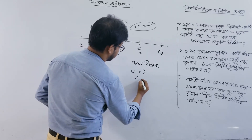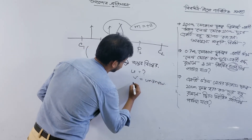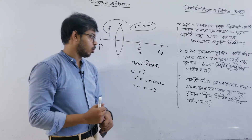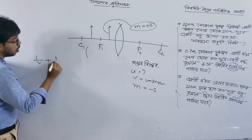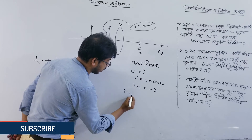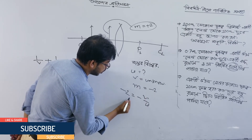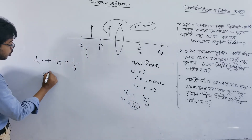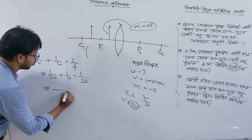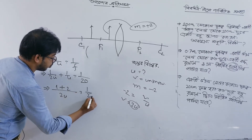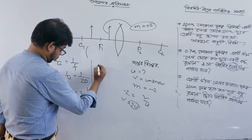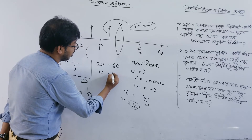Now v is unknown. v is unknown — let's eliminate it. We know m equals minus 2 because the image is real and inverted. So m equals minus v by u gives minus 2, which means v equals 2u. Substituting into the lens formula: 1 by v plus 1 by u equals 1 by f. Replacing v with 2u: 1 by 2u plus 1 by u equals 1 by f, where f equals 20. So 1 plus 2 divided by 2u equals 1 by 20, meaning 3 by 2u equals 1 by 20.